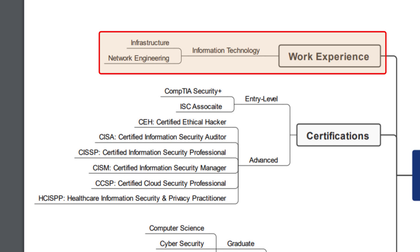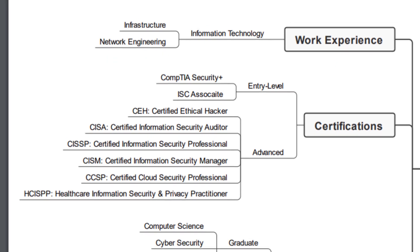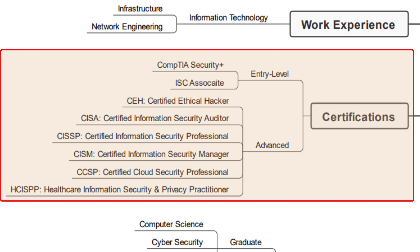The reason I point out work experience first is because right underneath I have IT certifications listed. Often, the path going through a certification combined with existing work experience is a great door opener for a new career in information security. Looking at entry-level certifications, I have the CompTIA Security Plus and the ISC Associate. Those two certifications are more entry level — I would not consider those alone to be strong enough to get you into information security, maybe for a junior level role. Really, if you want to get into information security, you need at least one of these combined with either college education or a more advanced information security certification.